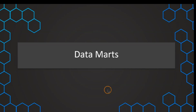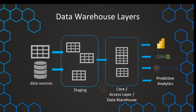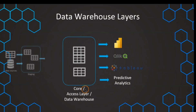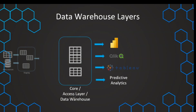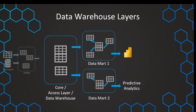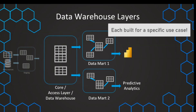We already know that we have the staging layer and our core layer, and usually this core layer serves as our access layer. But sometimes, if we are in a very large company and our data warehouse is built for many different use cases, with different tools and all user groups, departments, and regions using the same data warehouse, this can get complicated. Therefore, sometimes an additional layer is added on top of the core layer — and these are the data marts.